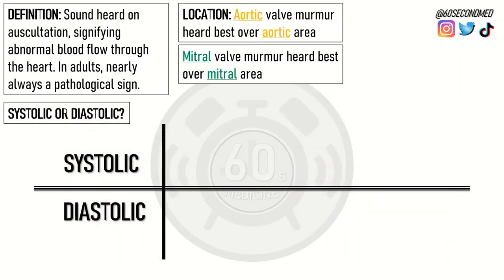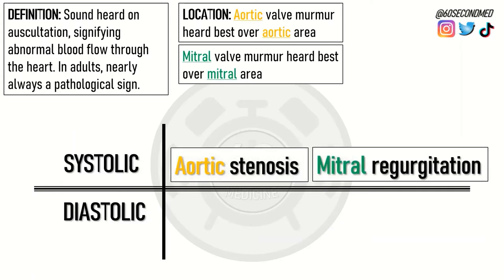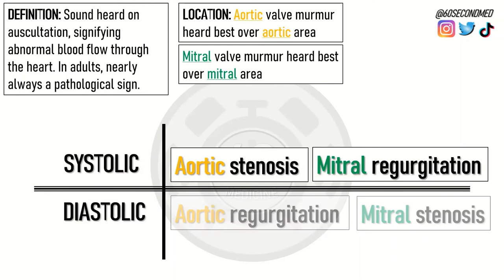We can think about whether the murmur is systolic or diastolic. A systolic murmur will tend to indicate either aortic stenosis or mitral regurgitation, depending on the location of the murmur that you've just heard. A diastolic murmur can signify aortic regurgitation or mitral stenosis.